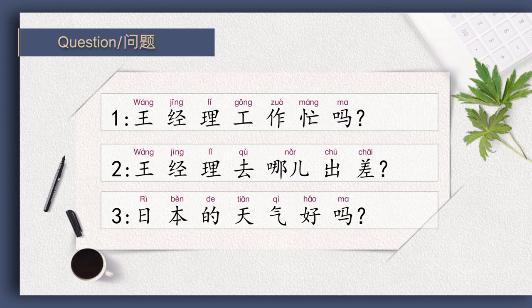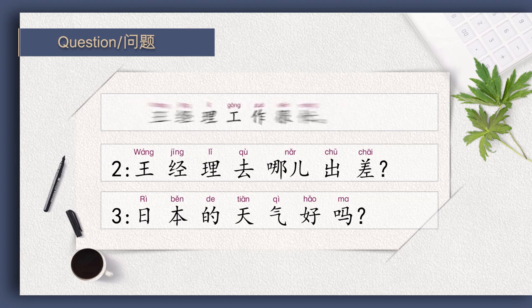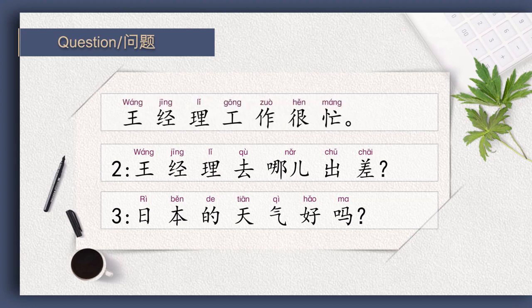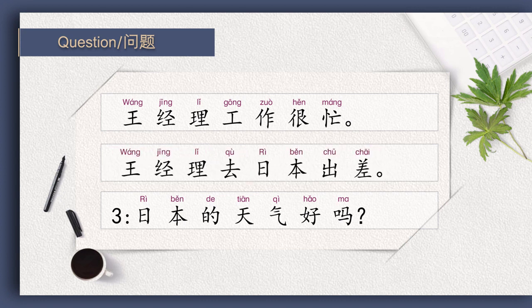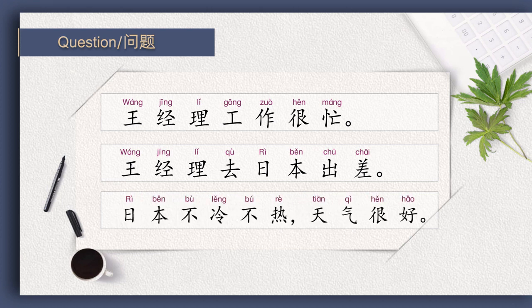王经理工作忙吗？ 王经理工作很忙。 王经理去哪儿出差？ 王经理去日本出差。 日本的天气好吗？ 日本不冷不热，天气很好。 Now please read with me.